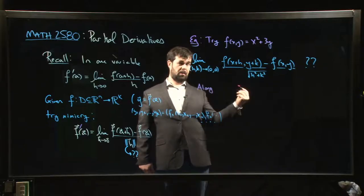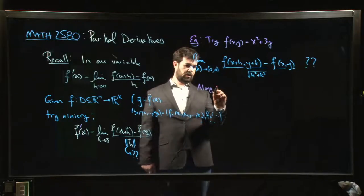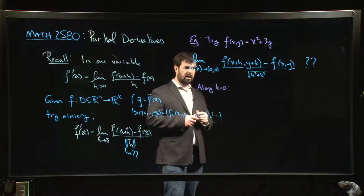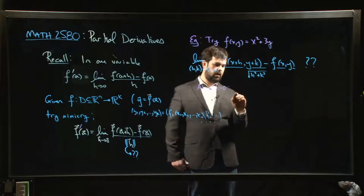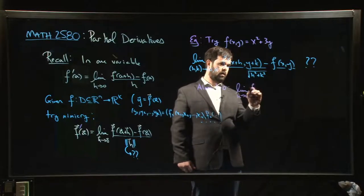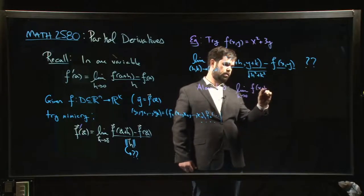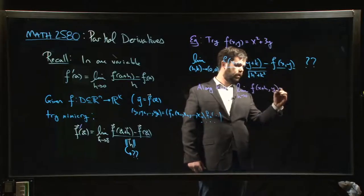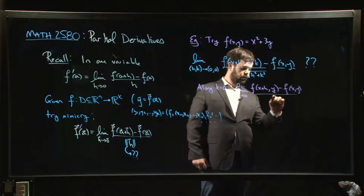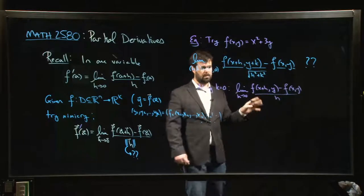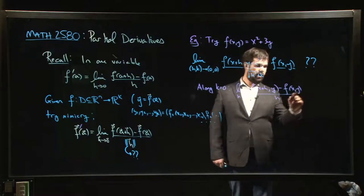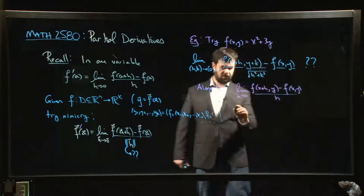So let's say we approach parallel to the x-axis, so we take k equal to zero. If we take k equal to zero, then we're dealing with a limit as h goes to zero, f of (x plus h, y), because k is zero, minus f of (x, y), over—well this is just going to be h. I mean okay, maybe absolute value of h, but we won't worry about that technicality. And so what does this limit look like?